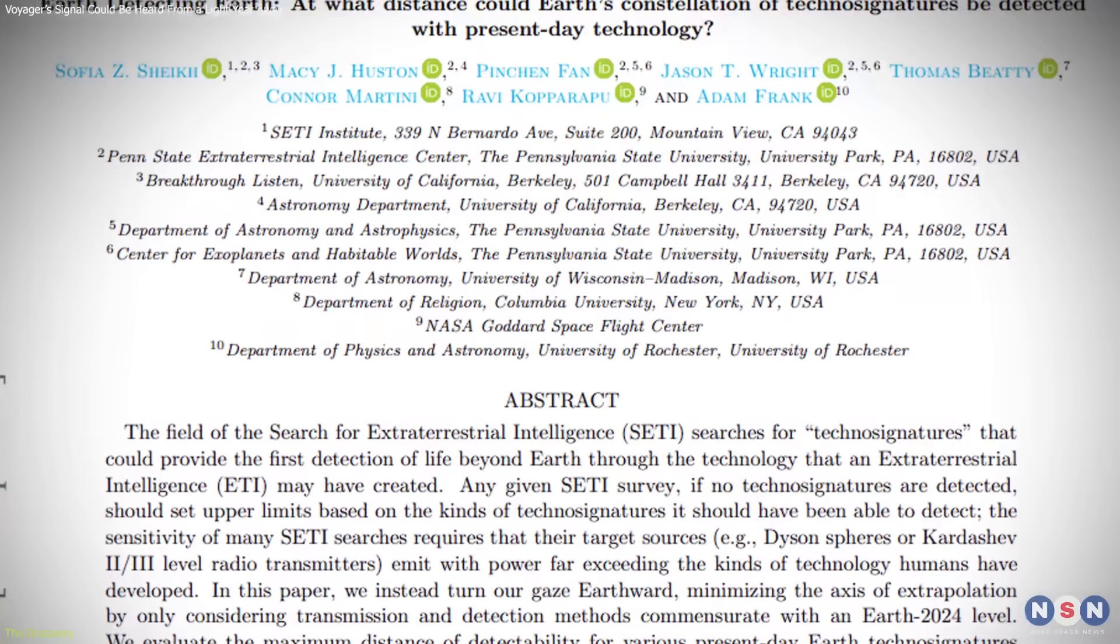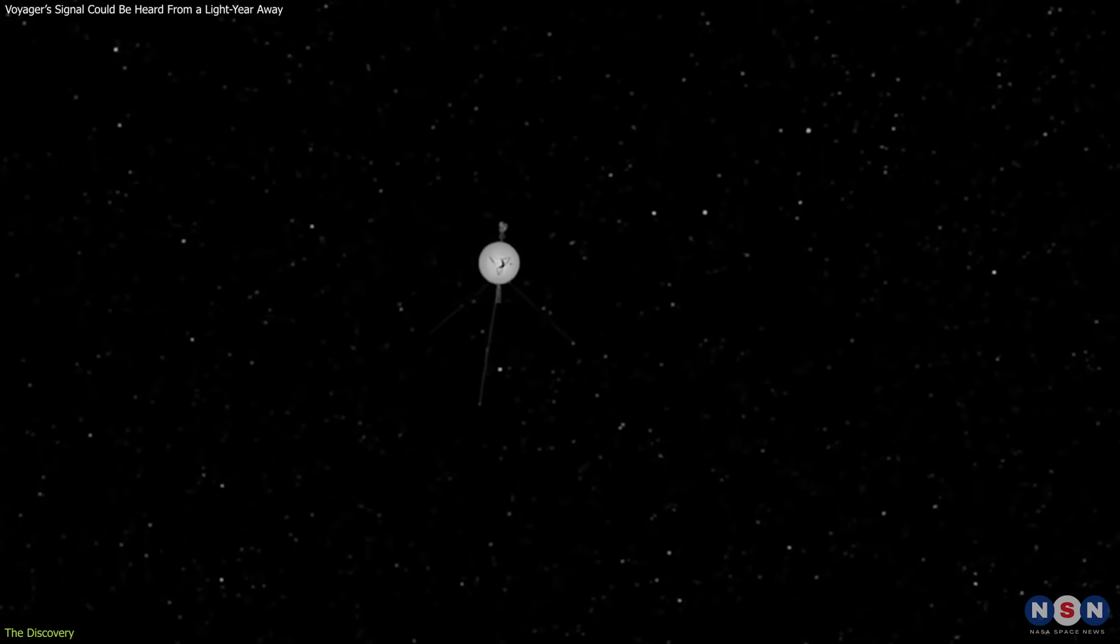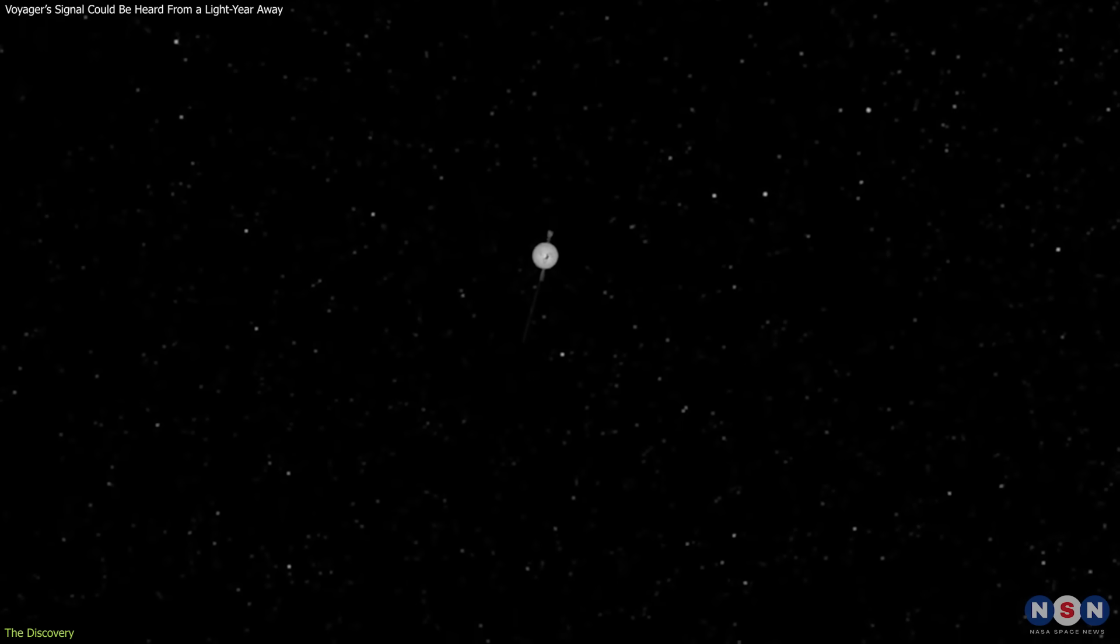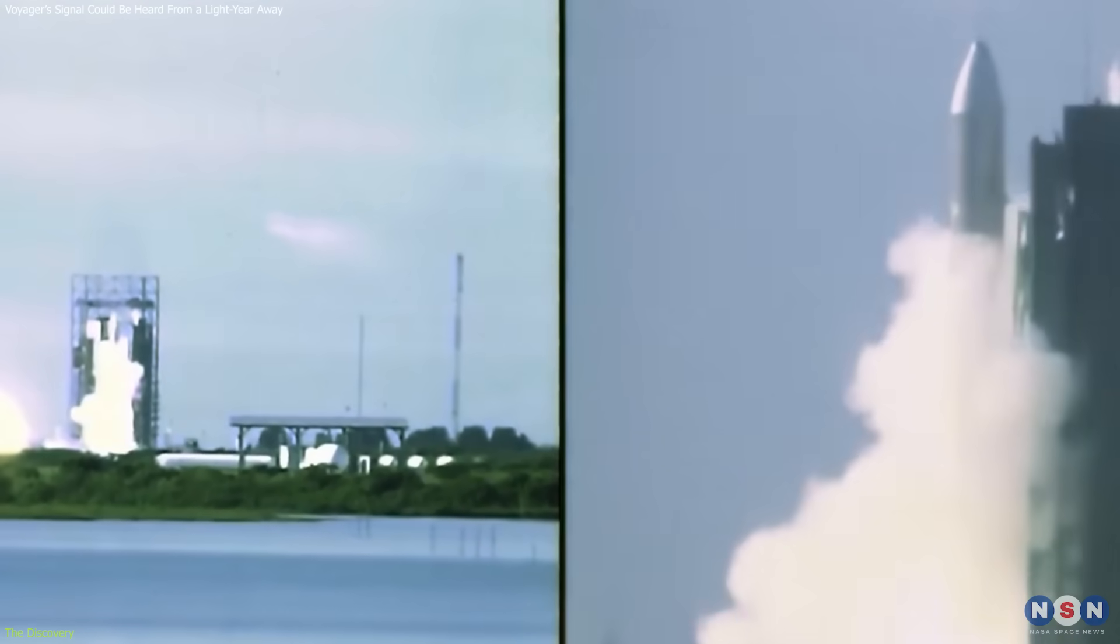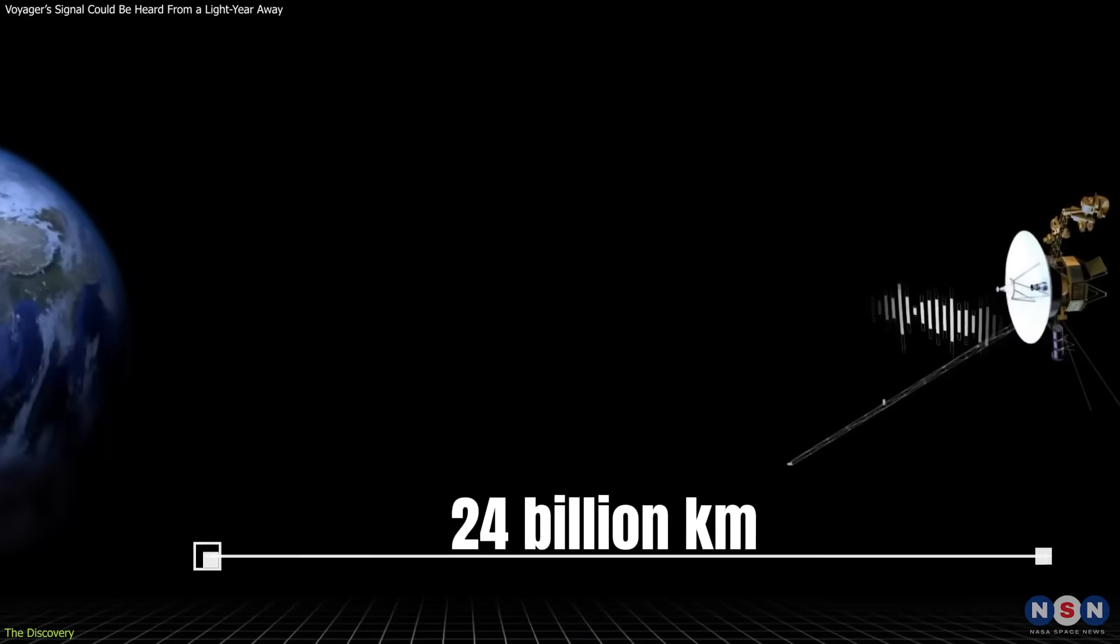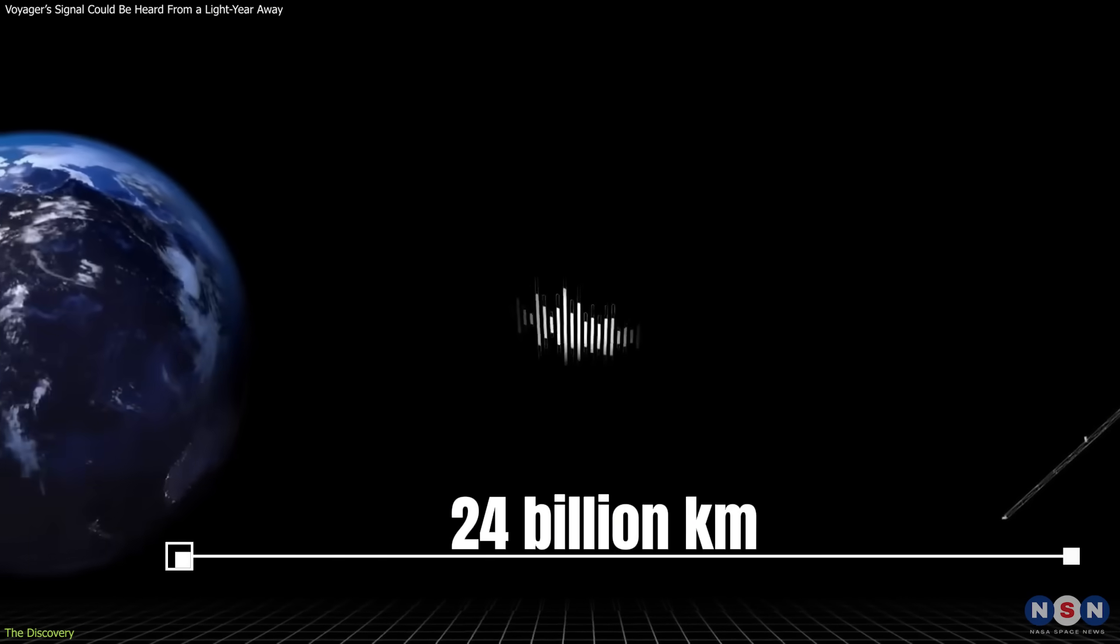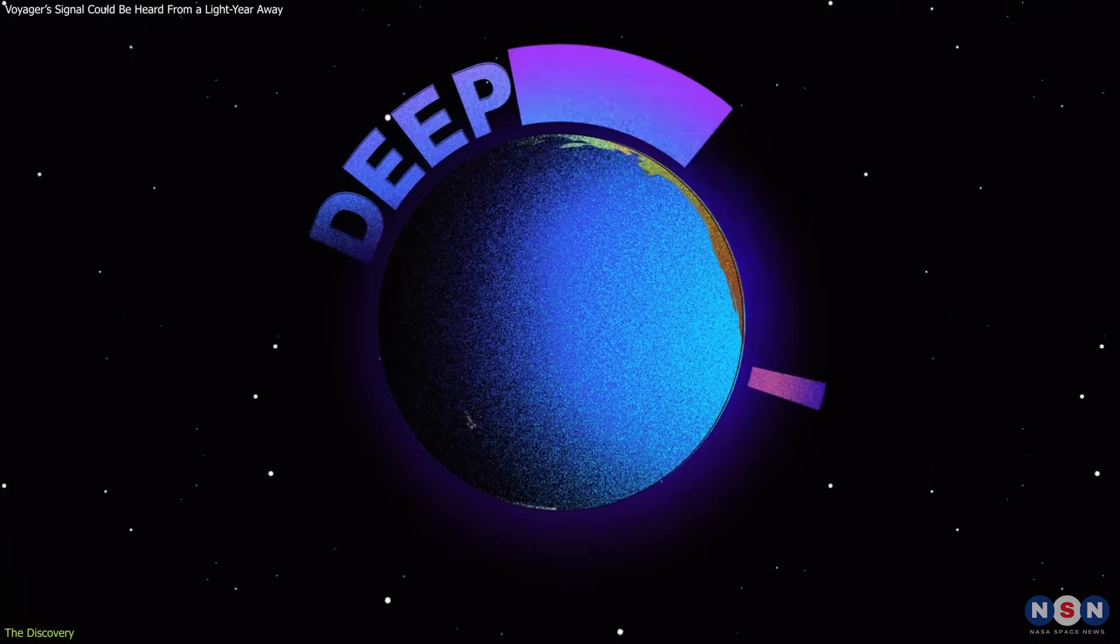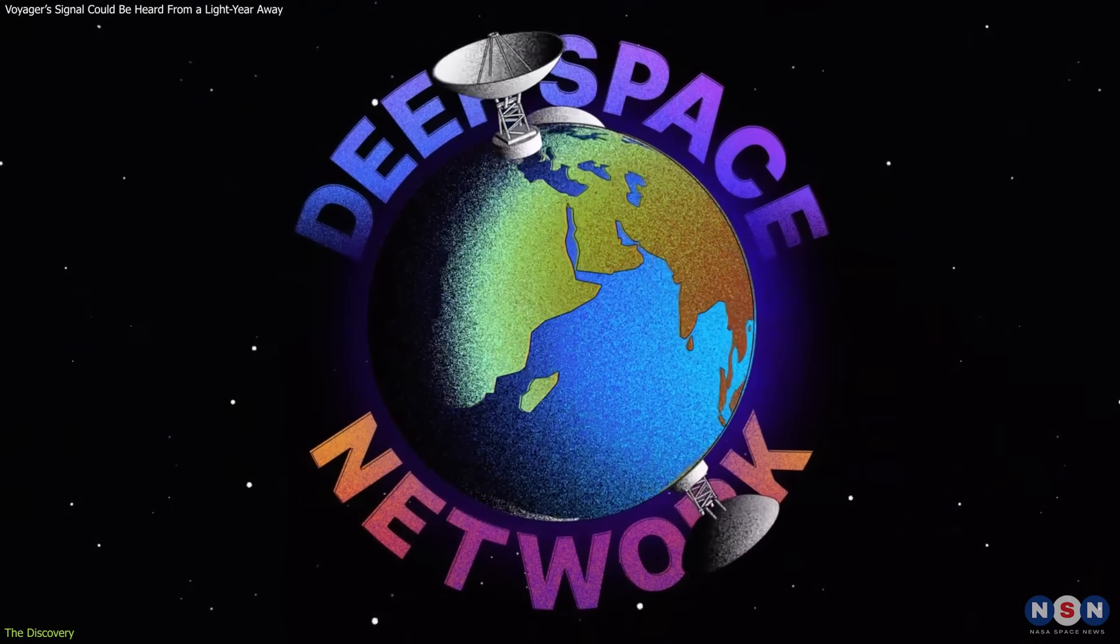Led by Dr. Sophia Shaikh, the study focused on determining how far we could continue detecting the Voyager spacecraft using current Earth-based systems. Launched in 1977, Voyager 1 is now over 24 billion kilometers from Earth and still transmitting. Its signal is picked up by NASA's Deep Space Network, a global array of highly sensitive radio antennas.